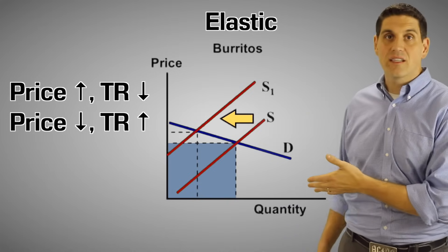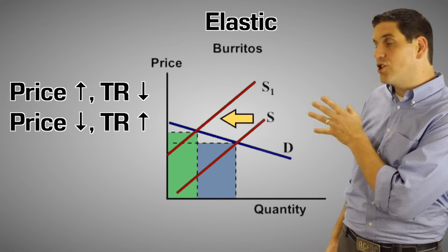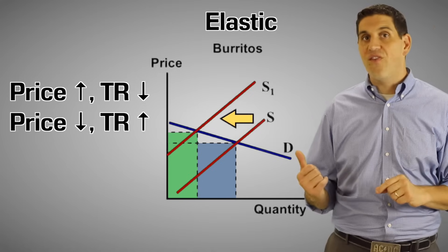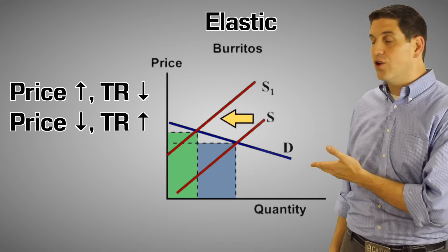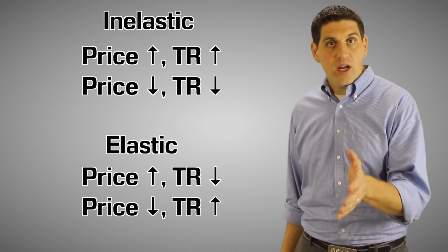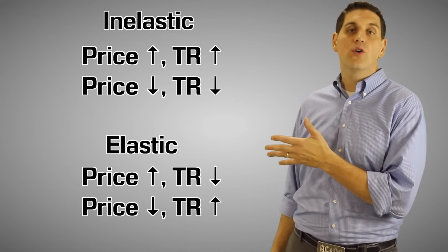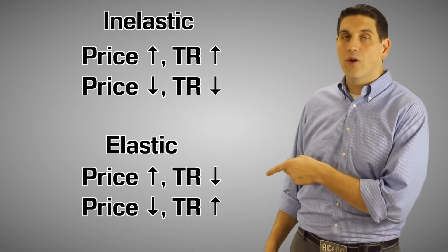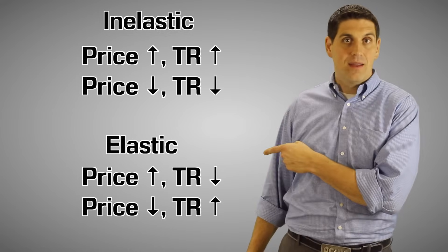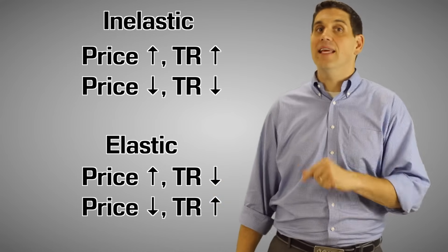But let's take a look at elastic demand. When the price goes up, a whole lot of people don't want to buy it, and so the size of the total revenue box gets smaller. So when the price goes up, total revenue falls. When the price goes down, total revenue goes up. That's why products that have elastic demand will have sales all the time. What you're going to see on a test is a question that says: if there's a given product X, and the price goes up and the total revenue goes down, what must be true? And the answer is it's elastic demand — if the price goes up and the total revenue box gets smaller, that's elastic demand.